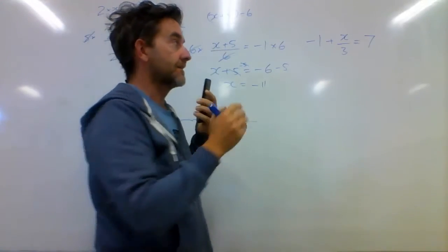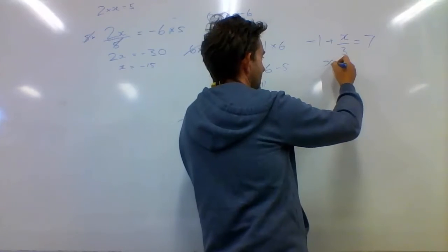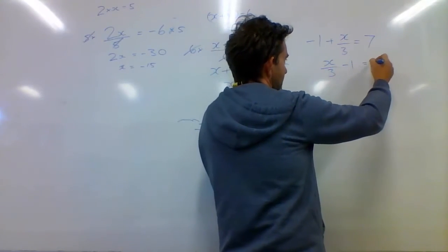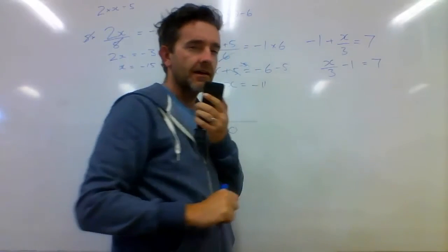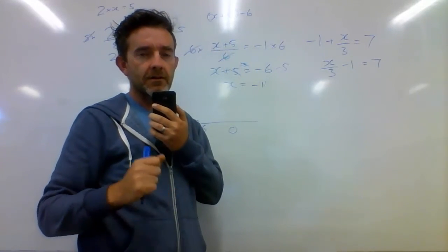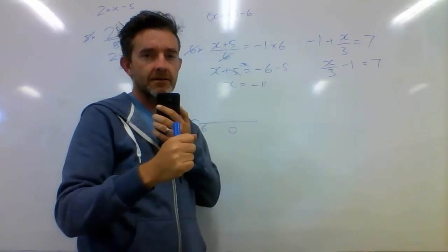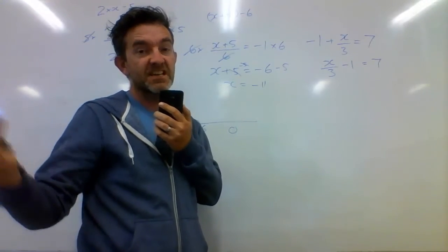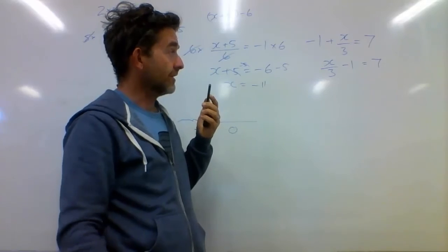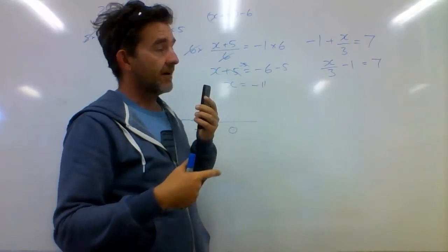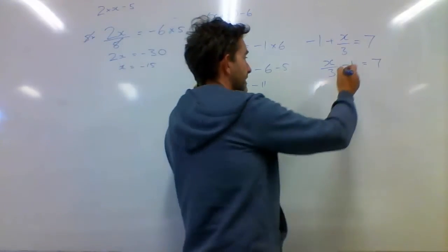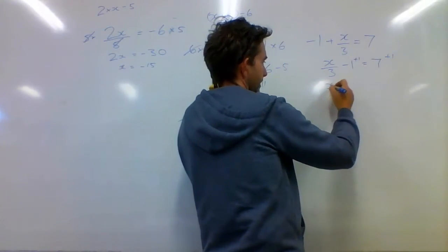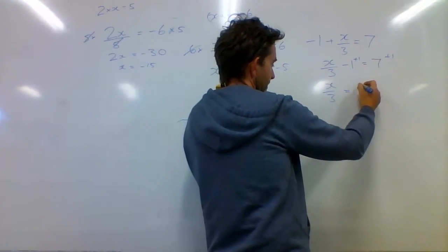Adding a negative number is the same as taking away, so we can rewrite this as x over 3 take 1 equals 7. What I need to do here is add 1 to both sides — plus 1 here, plus 1 there. So x over 3 equals 8.